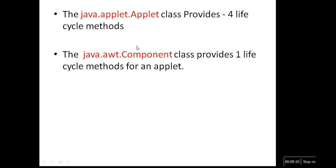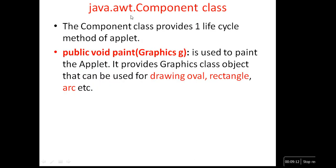The paint method is available in the java.awt Component class. It provides the Graphics class object that can be used for drawing actions such as drawing ovals, rectangles, and so on. The paint method is used for graphic component purposes — that is why it is stored in AWT.